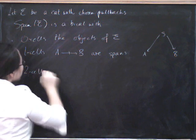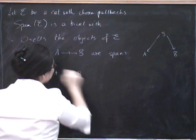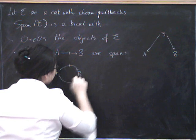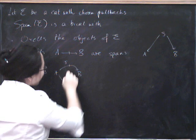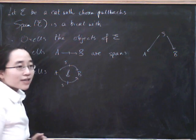Now what on earth could a two cell possibly be? Well, there's only one thing it could be, as long as you think about where a two cell lives. If you have a one cell S here and a one cell S prime, two cells live in places like that.